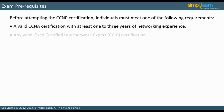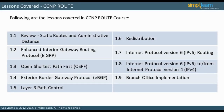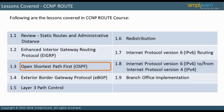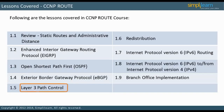In the next slide, we will preview the titles of lessons in this course, starting with the CCNP Route Module. There are nine lessons in the CCNP Route Module. First, there is a review of static routes and administrative distance. We then move into Dynamic Routing Protocols, starting with EIGRP, then OSPF, followed by Exterior Border Gateway Protocol.